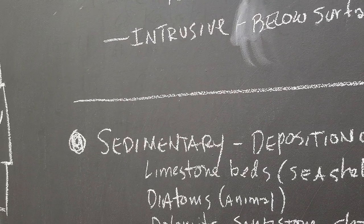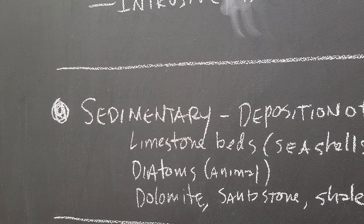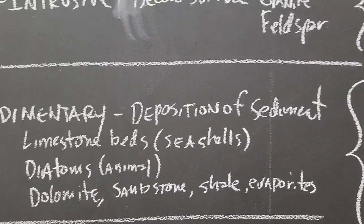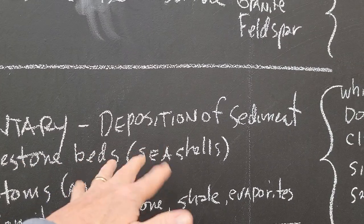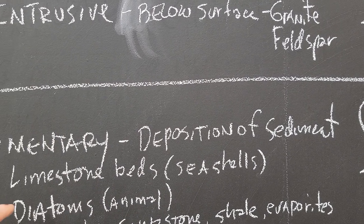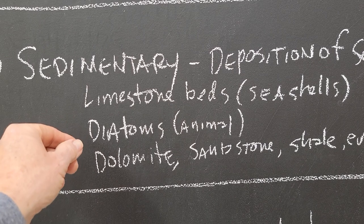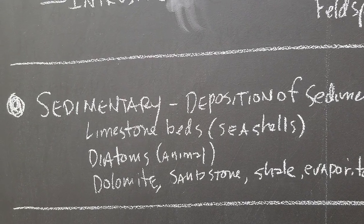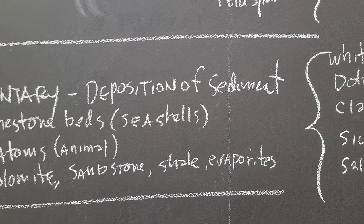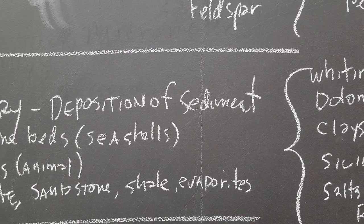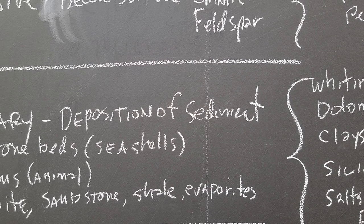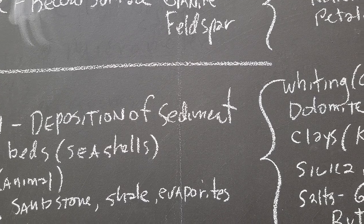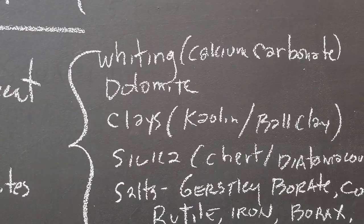Another type of rock we use a lot from is sedimentary. This will be sediment deposited in, say, limestone beds — maybe seashells form in an area and get covered over, making limestone. Diatoms are little creatures with silica shells that may form a rock layer. Dolomite, sandstone, shale, etc. And then there are evaporites like boron and Gerstley borate — and I think lithium carbonate too — these are salts dissolved in water, and when that water evaporates it forms a layer of these materials.